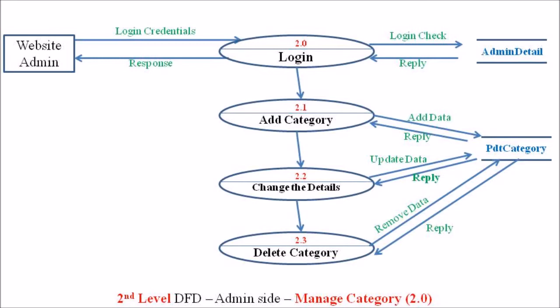The third independent process in manage category is the change detail process, which allows updating individual details of products or categories — such as price, offers, or new promotional schemes. The product category database must be updated accordingly. The final process, labeled 2.3, is the delete category process, where a particular set of data can be deleted from the product category database, and those changes are reflected in the website or web portal. This completes the level 2 DFD for manage category.